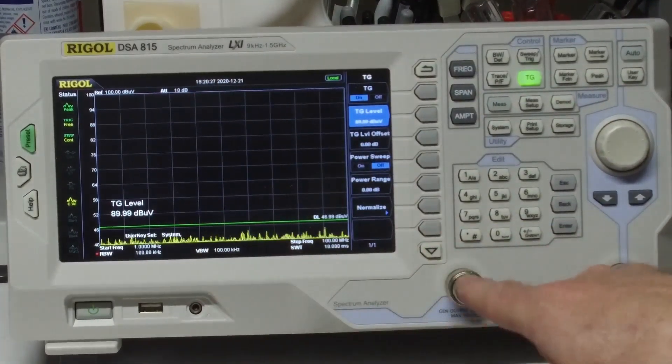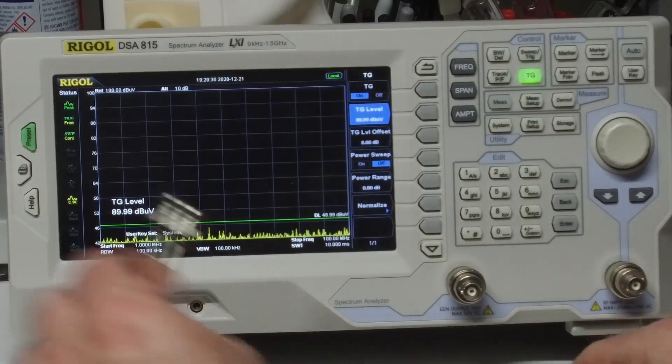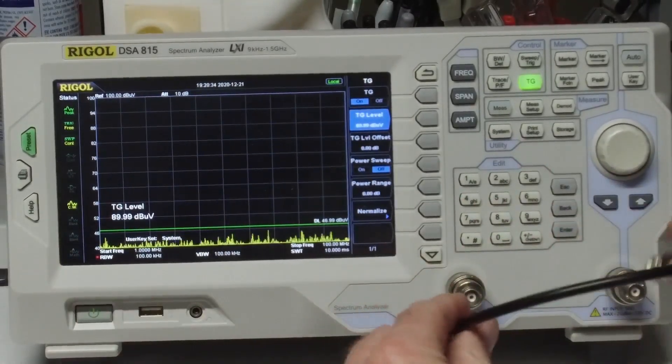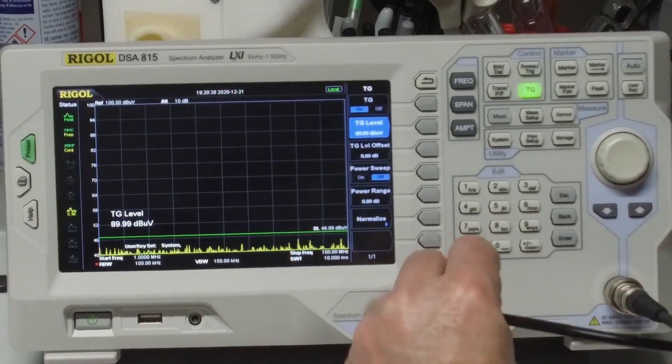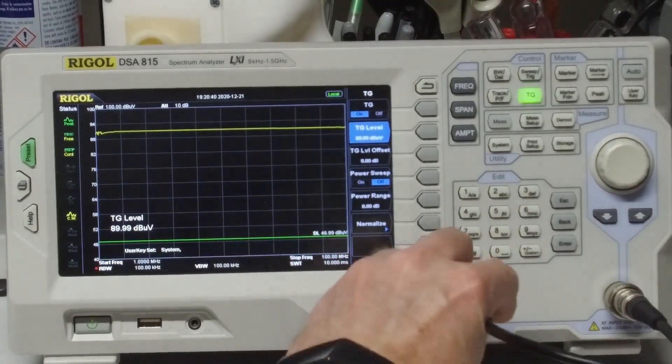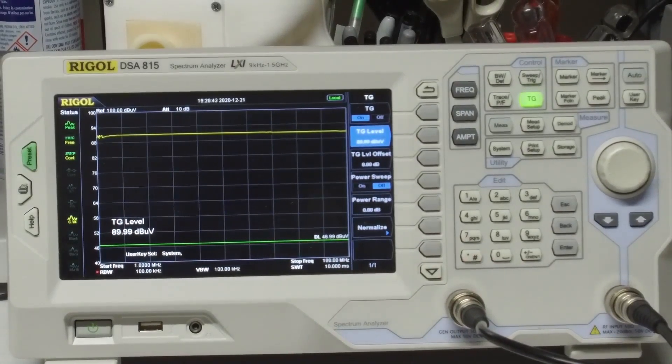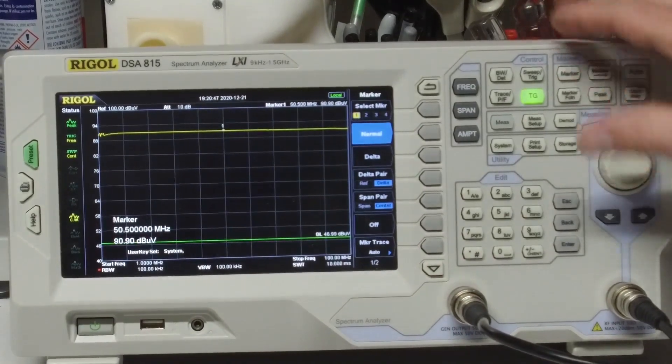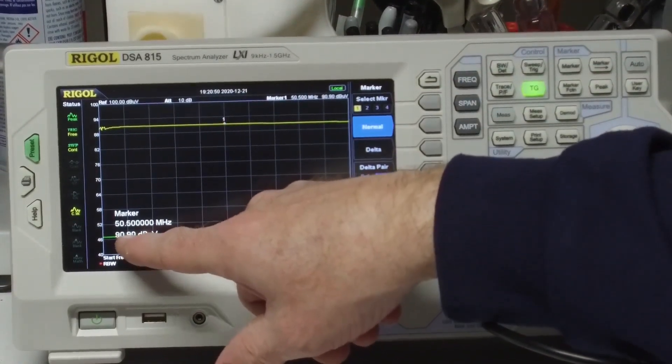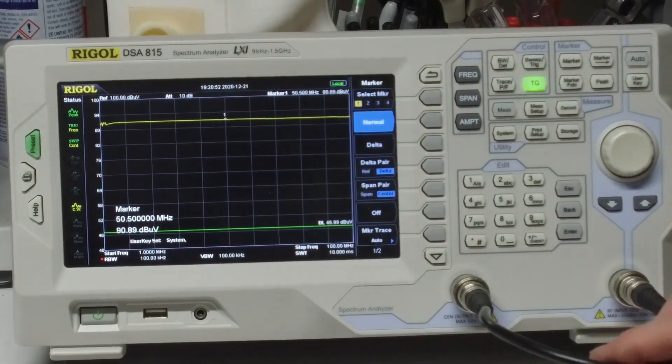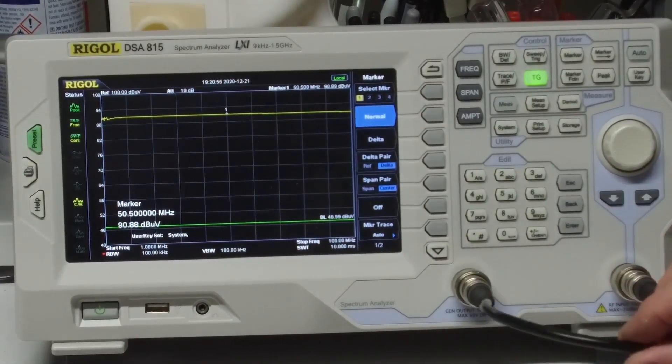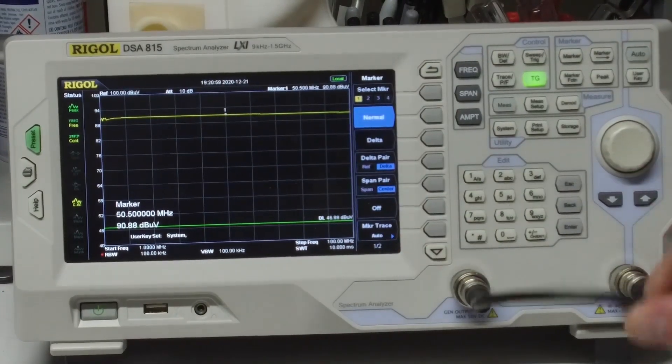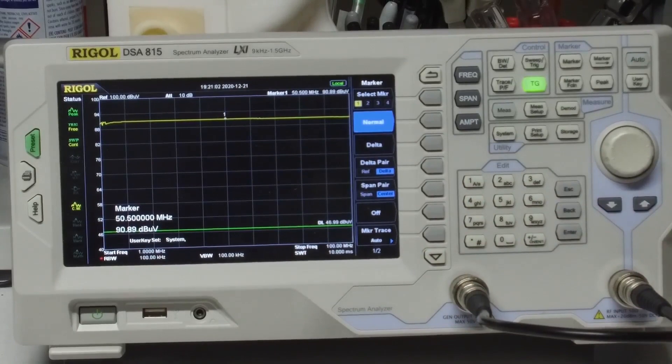So nothing's changed because we're not connected. I can take a little jumper cable here and connect the output to the input. And there we go. I can set the marker here and we can see that we're at 90 dB, so roughly 90 dB. And this wire's got a pretty flat frequency response from one megahertz to 100 megahertz.